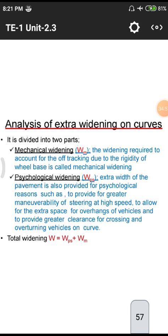Extra widening is divided into mechanical widening and physiological widening. The total widening depends on both these factors. Mechanical widening accounts for off-tracking due to the rigidity of the wheel base. Mechanical widening Wm depends on the wheel base, while physiological widening depends on physical and psychological reasons such as the driver's tendency to maintain clearance and visibility on curves.